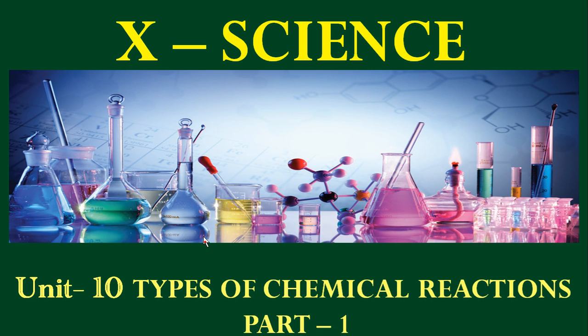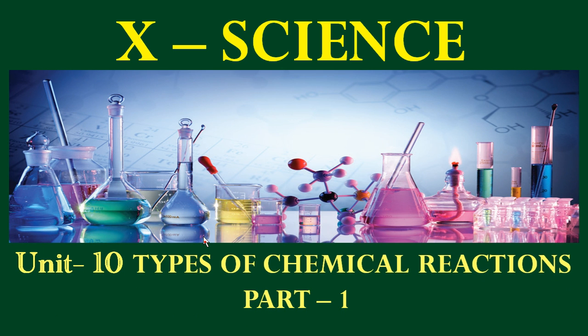Good morning students. Welcome to 10th Science, Unit 10: Types of Chemical Reactions, Part 1. In our day-to-day life, you come across various phenomena like fading of colors of cloths, burning of combustible substances like cooking gas, wood and coal, and the rusting of iron articles. These are chemical changes. In this chapter, we will discuss about the types of chemical reactions.